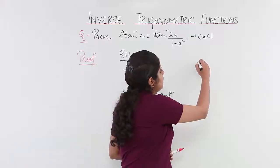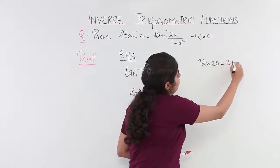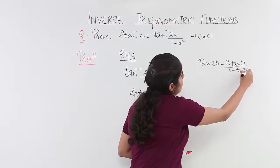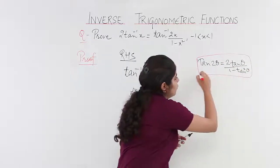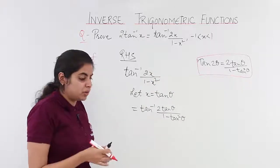We have already studied tan 2 theta is equal to 2 tan theta upon 1 minus tan square theta in our junior class of class 11th. This is how we go about it further.